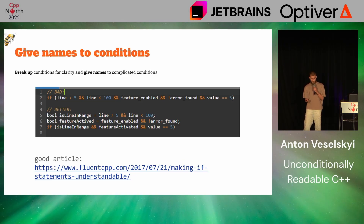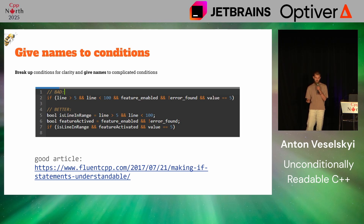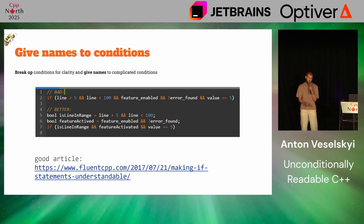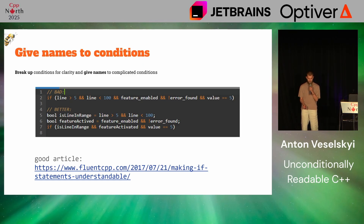The good part is that there is no punishment for doing that, there is no performance cost. If you initialize your bool variable once and then use it once, the compiler will just throw it away, and the bad and better versions will be exactly the same for the compiler.